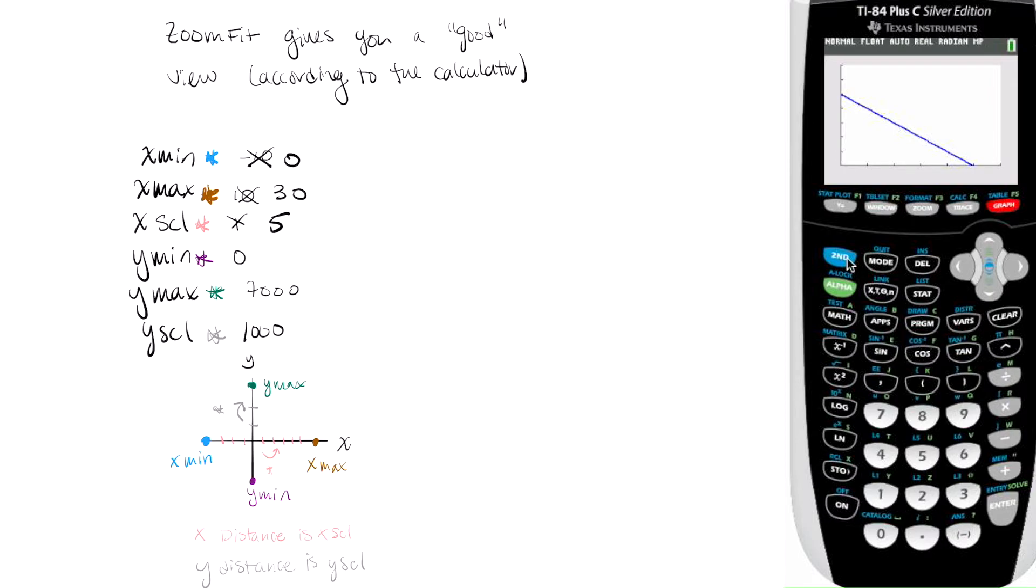So if I look at my table, it's going to show me these numbers I don't really want to see. They're a little small. And I don't want to tap all the way down to 25. So I'm going to go to second table set. And I'm going to start my table at 25. And I'm going to just move by increments of 1. So now I can go to my table. And I'm going to verify that 25 is an x-intercept. And if you notice, we have the point 25, 0. So indeed, my x-intercept is 25.